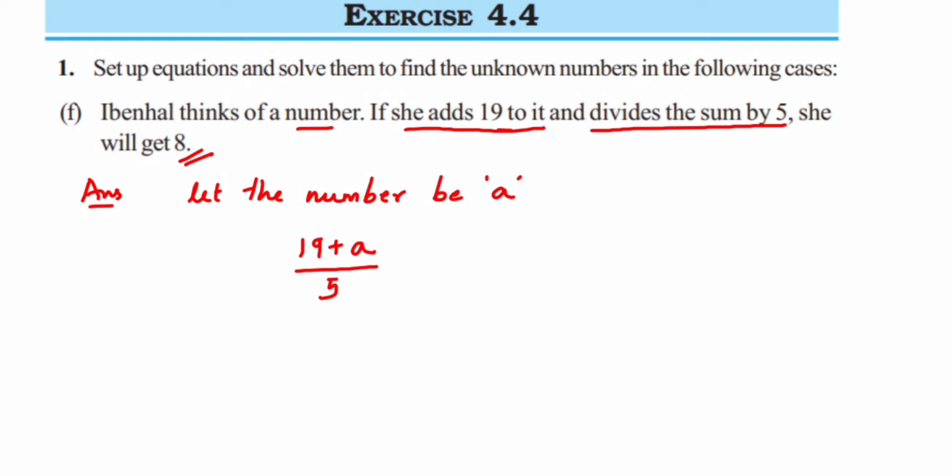If you observe here, we cannot transpose a to the other side directly because there's division first. So I'm going to remove this 5 from the denominator. When 5 is in division and you take it to the other side, it becomes multiplication. We're using the transpose method here. So 19 + a equals 8 times 5, which is 40. So 19 + a equals 40.